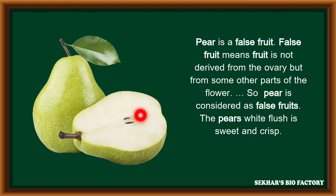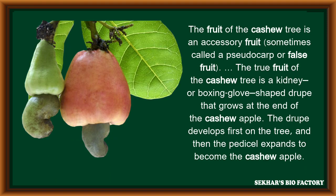In pear, the white flesh is sweet and crisp in nature. Another best example for false fruit is cashew nut, Anacardium occidentale. In the cashew tree, an accessory fruit or false fruit — sometimes called pseudocarp — is derived from different parts of the flower. The kidney-shaped or cashew nut is considered the real fruit, developed from the terminal portion. The pedicel of the flower, due to storage of food material, becomes the cashew apple, which is the false fruit.